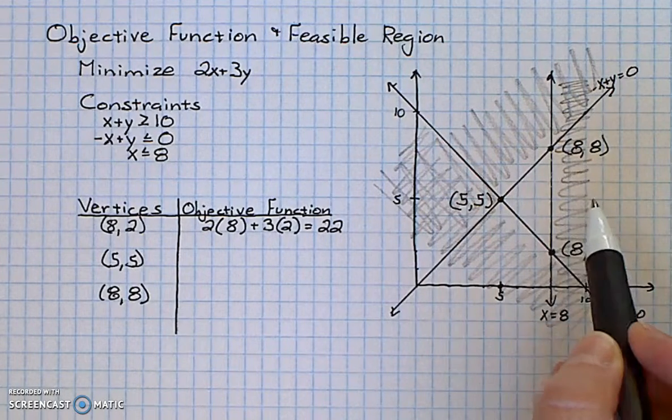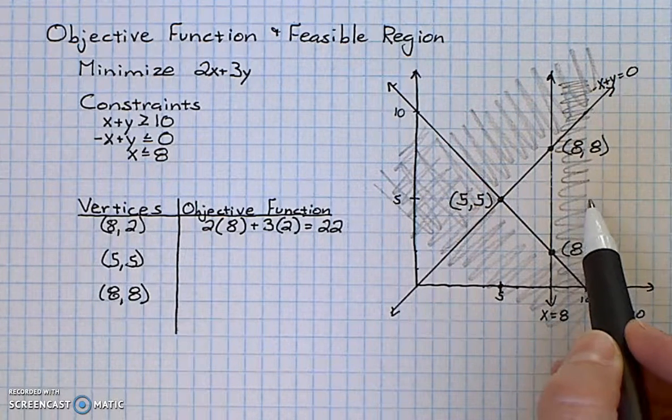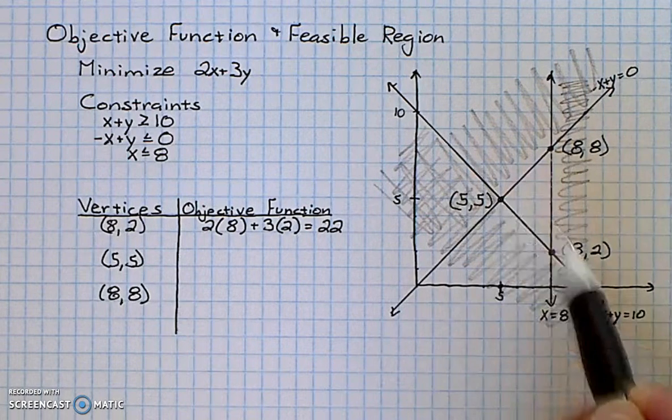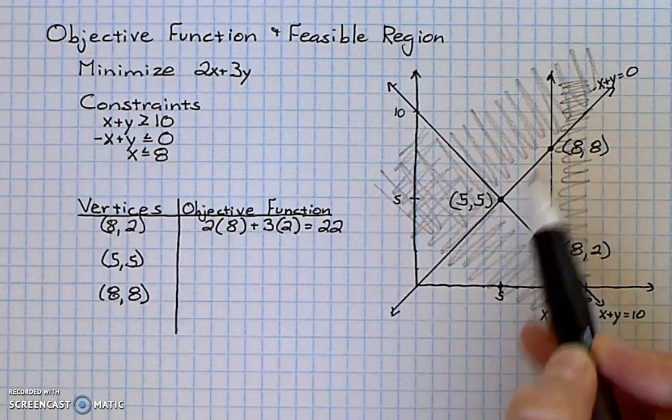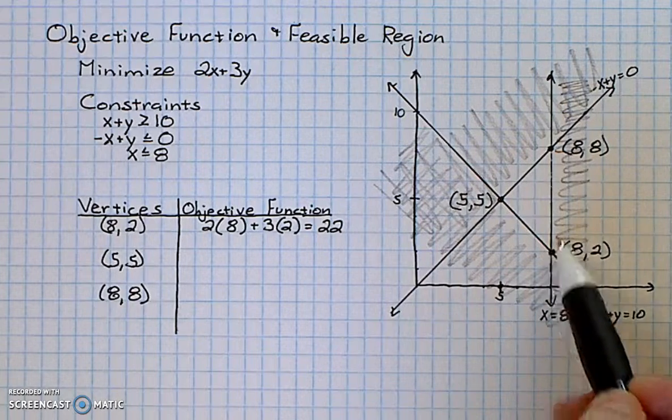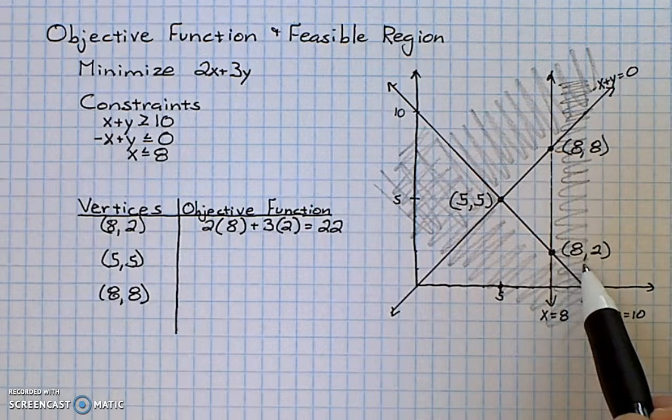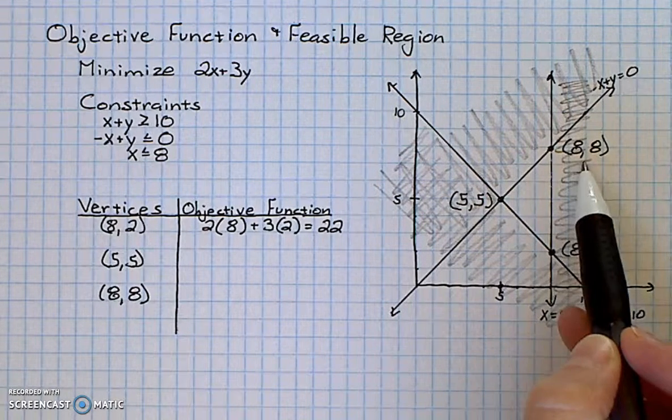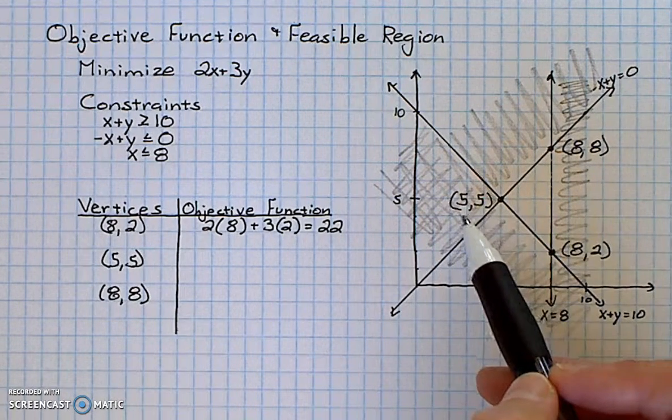In this situation I have already graphed the constraints and also labeled the vertices. Here my feasible region is a triangle. My bottom right-hand vertex is 8, 2, above that is 8, 8, and to the left is 5, 5.